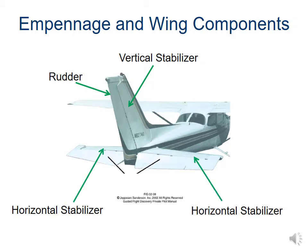The horizontal stabilizer, like the vertical stabilizer, is bolted directly to the plane — sometimes at a slight angle to maintain the best stability depending on the aircraft type — and helps maintain stability specifically in the up-and-down direction. The elevator is on the back of the horizontal stabilizer and moves up and down, allowing us to direct the nose of the plane up or down as needed.